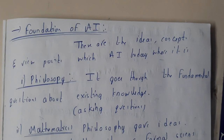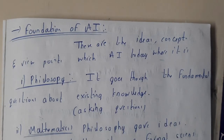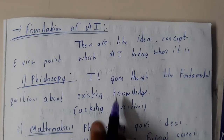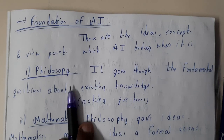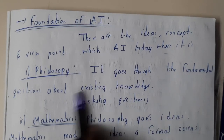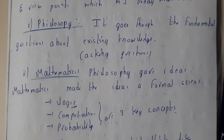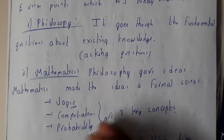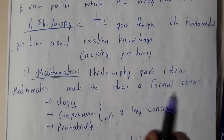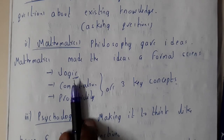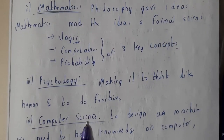The foundation of AI is about where you find AI: philosophically, psychologically, mathematically, in computer science, and in linguistics — five major sectors. Philosophically, AI goes through fundamental questions about existing knowledge. Mathematically, it handles large computations, probabilities, and gives ideas about formalization of science. The main mathematical concepts are logic, computation, and probability.